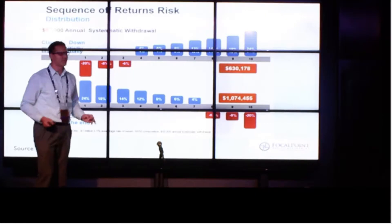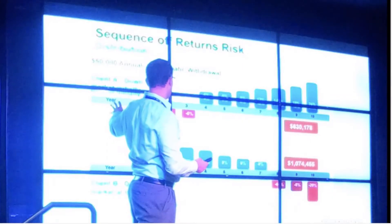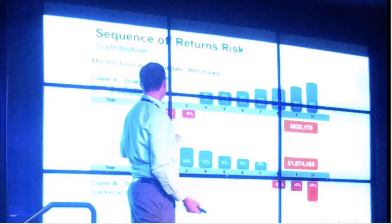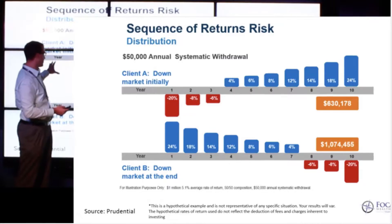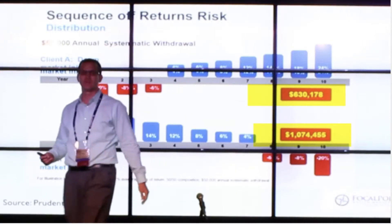A lot of people are not aware of this. Before, I showed what happens when you're accumulating funds — now this is what happens when you're taking distributions. You've got two people with the exact same scenario: both taking $50,000 a year out, both started with a million. Investor A had three bad years at the beginning of their retirement, and Investor B had three bad years eight, nine, ten years later. What you can see is Investor A ended up with $630,000 and Investor B had $1.074 million.